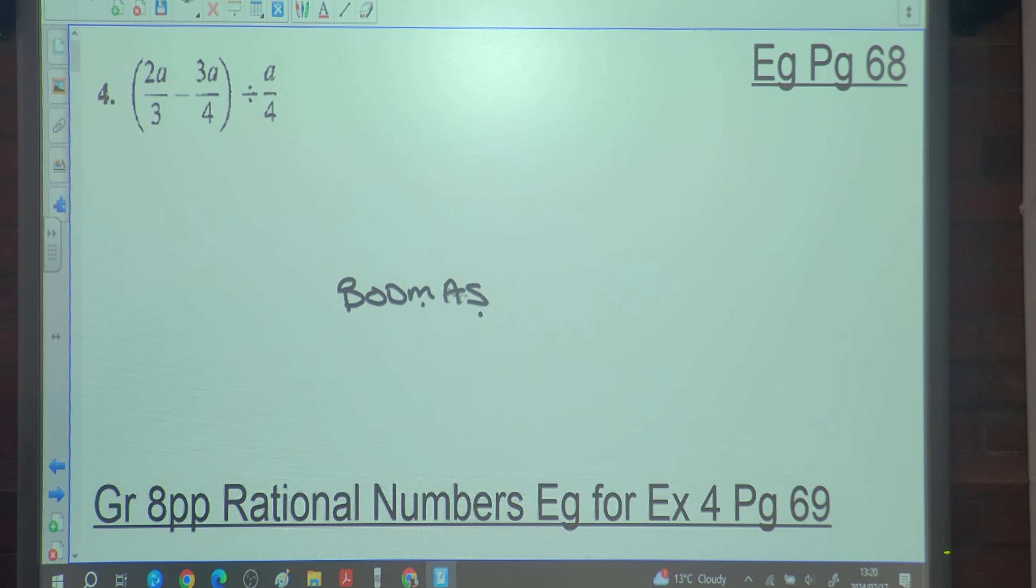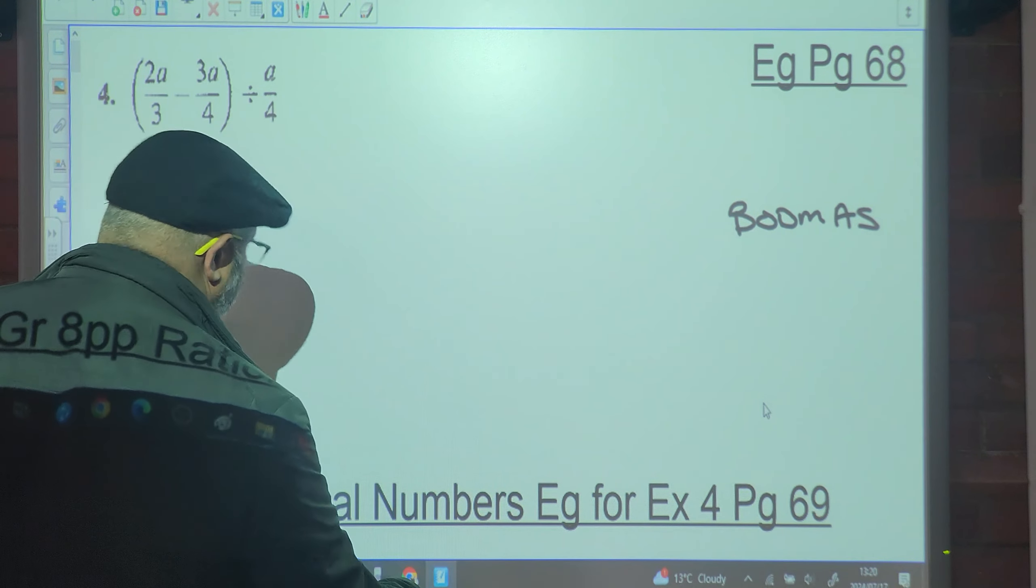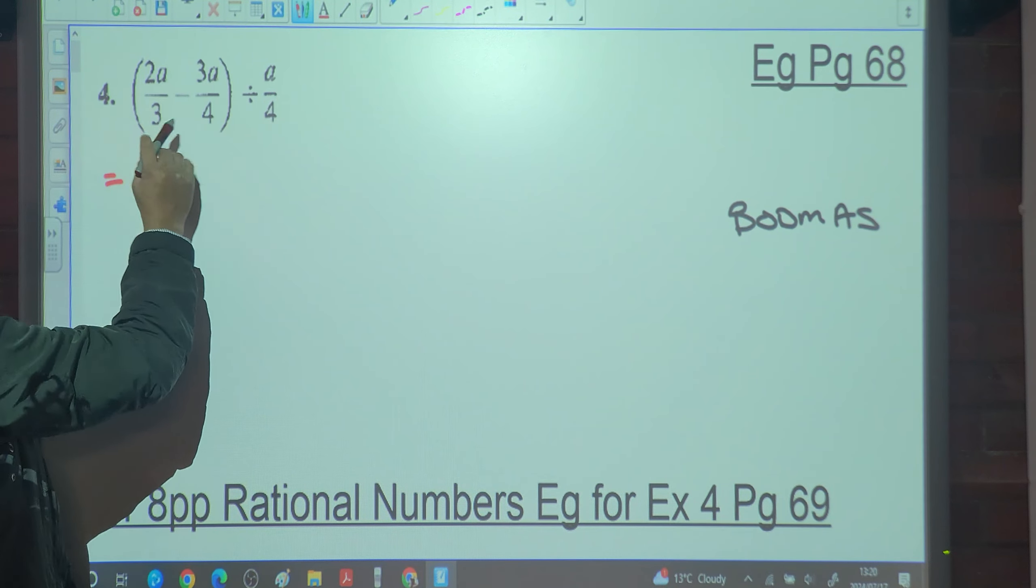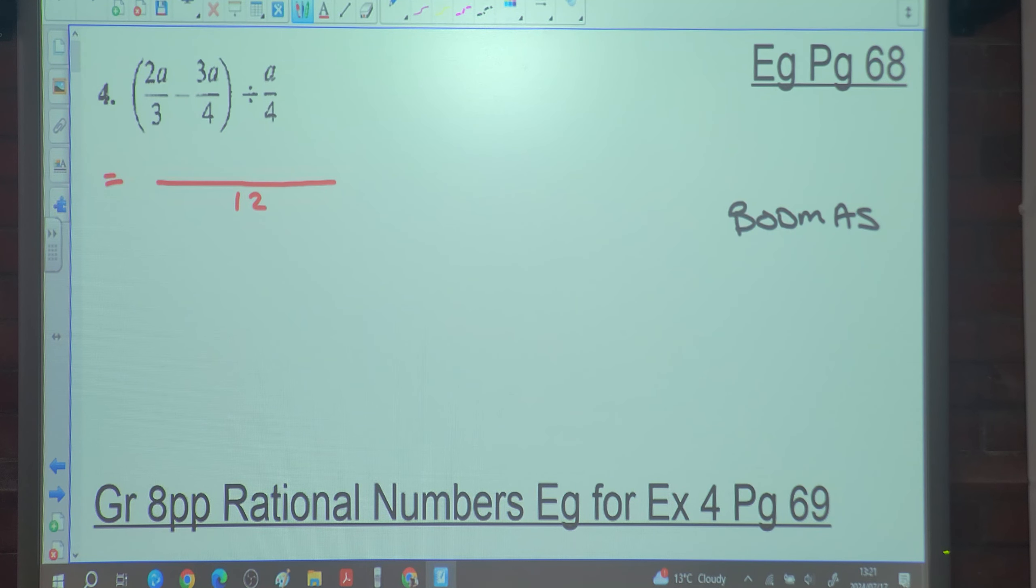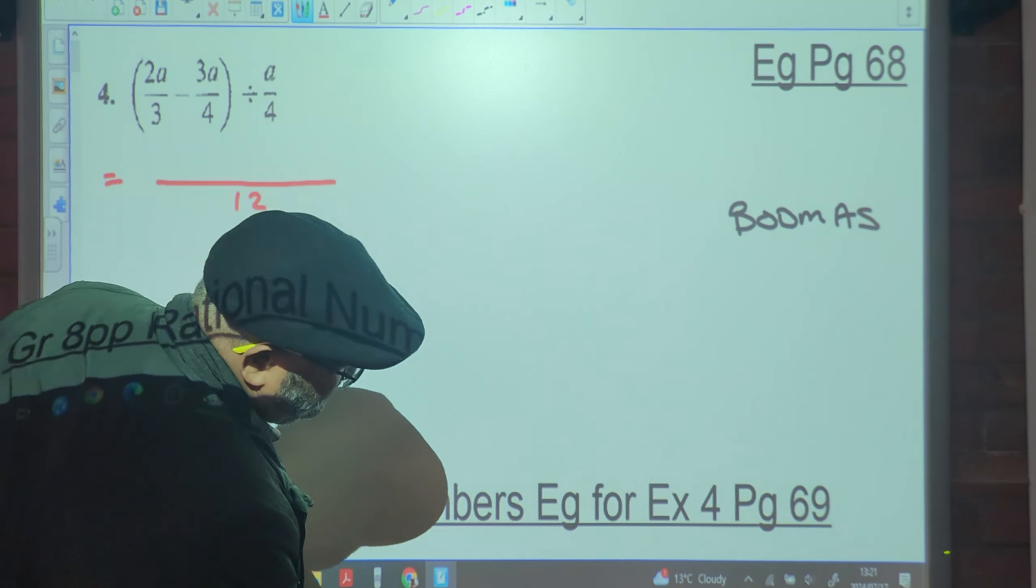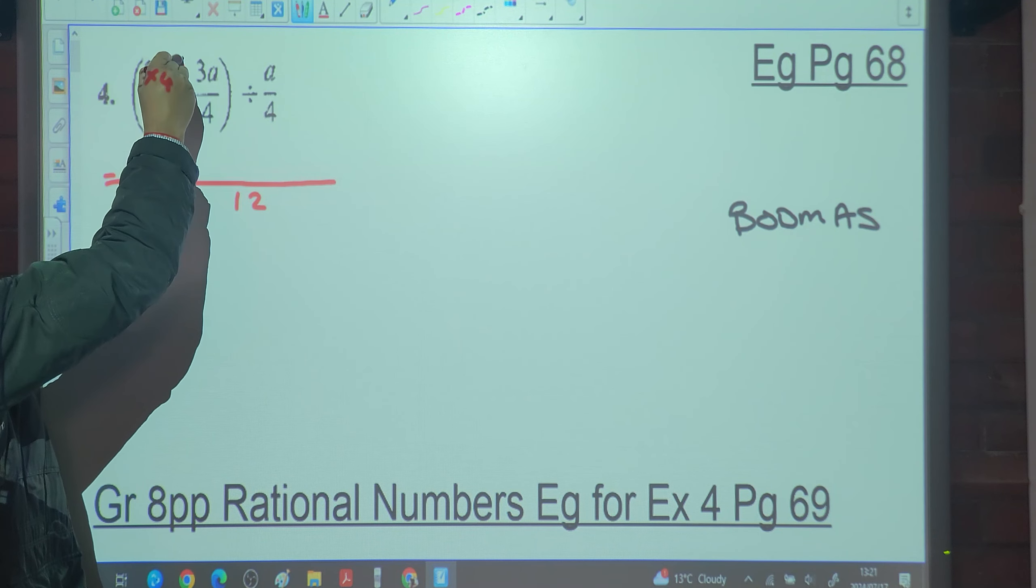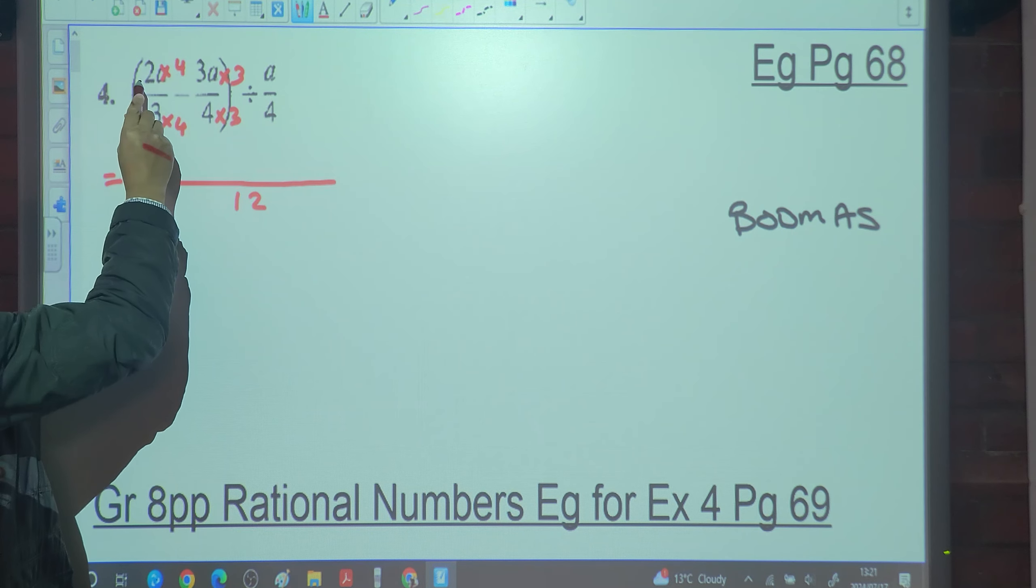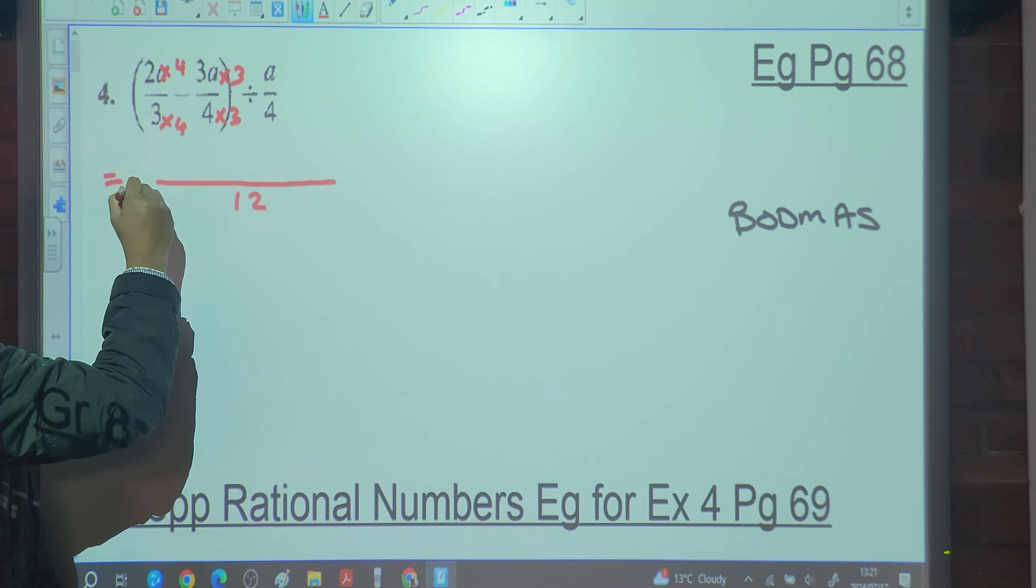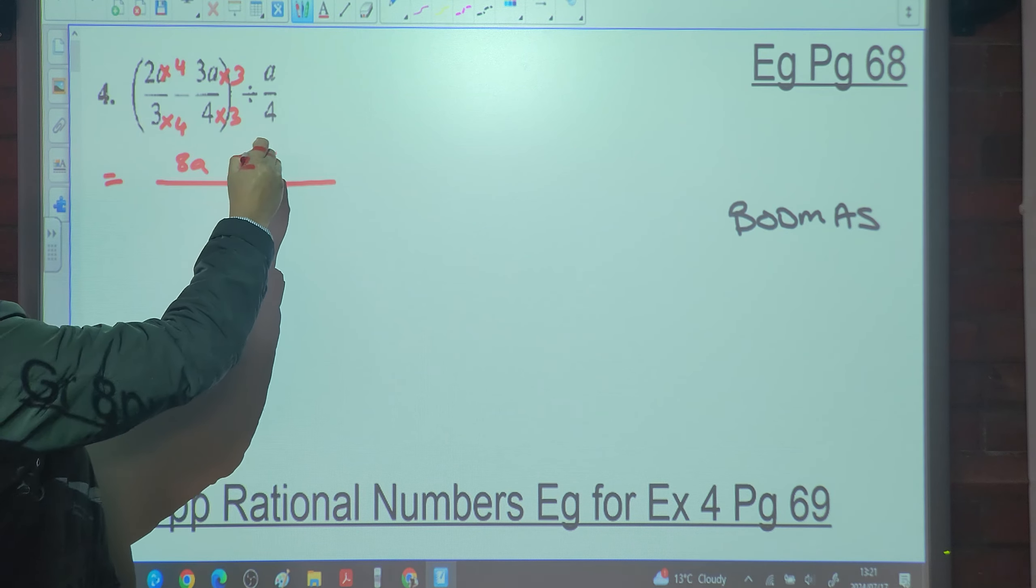All right, according to BODMAS, what must be done first? Brackets. So what's your LCD inside this bracket? Twelve. Well, because I'm making it one fraction, I can drop the brackets. Three multiplied by what is 12? Four is 12. Four multiplied by what is 12? Three. In other words, we have two A times four? Eight A. Minus three A times three? Nine A. Eight A minus nine A over twelve.